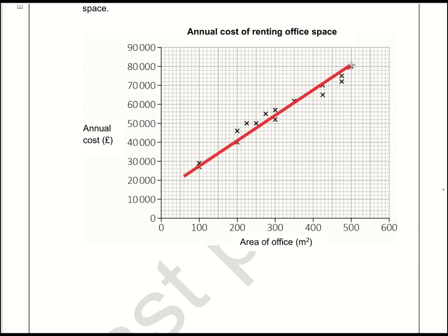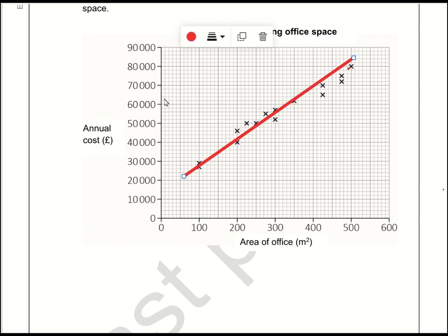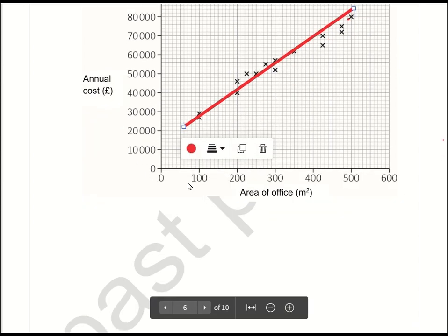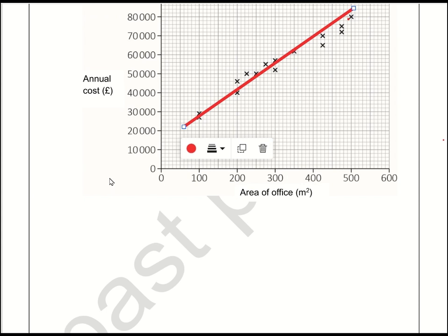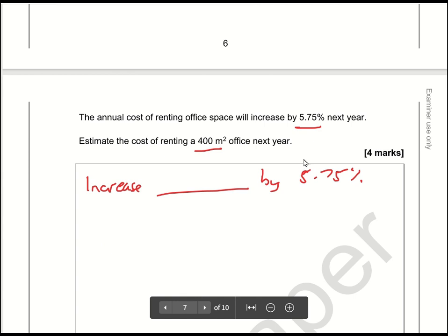So I'm going to adjust the line to be a little steeper, so that 400 square metres corresponds exactly to 70,000. You can use 67,500 — there is a range acceptable in the mark scheme — but given we're not using a calculator, we need a fairly nice figure. If it was just 10% it wouldn't be a problem, but 5.75% is a pretty horrible percentage number.